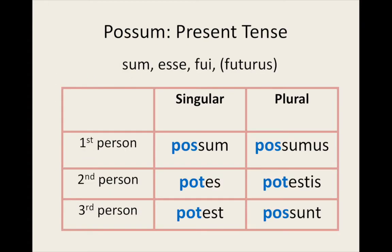Here is the present tense active conjugation of 'possum'. Possum — I am able. Potes — you (singular) are able. Potest — he, she, it is able. Possumus — we are able. Potestis — you (plural) are able. Possunt — they are able.